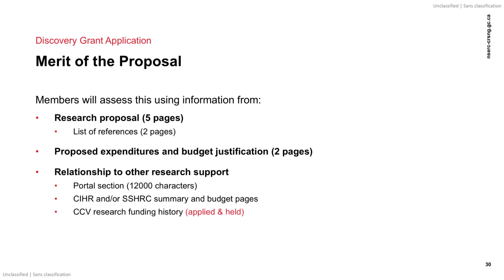The evaluation group members use the following elements of the application to assess the merit of the proposal: the research proposal (five pages) along with up to two pages of references; proposed expenditures and budget justification; relationship to other research support, which includes a 12,000-character text box in the research portal; CIHR and/or SHRC summary and budget pages, if applicable; and your CCV research funding history.